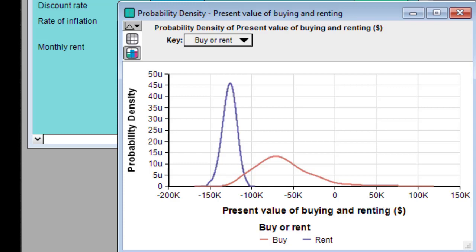There is uncertainty in both the cost of buying and renting, and so what we're seeing here is a probability density graph. The probability distribution for each quantity appears as a bell-shaped curve. The negative values on the x-axis denote cost, in other words, cash flowing out of my pocket.